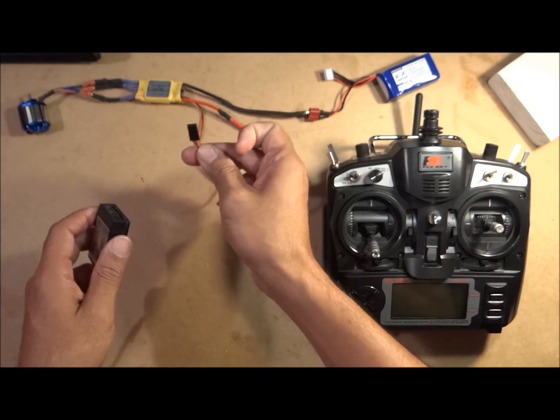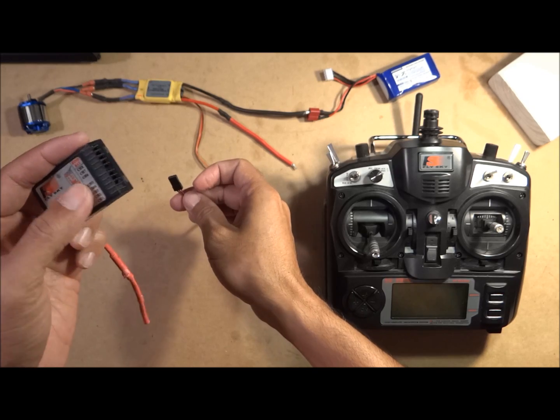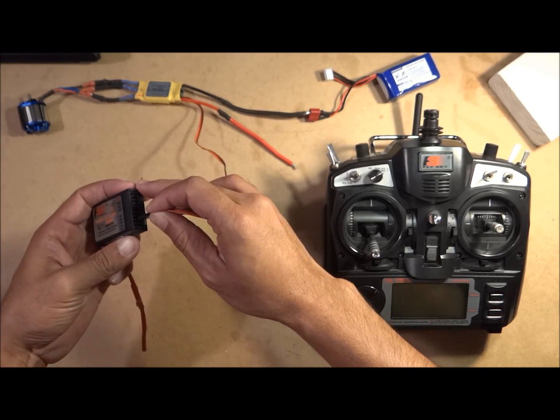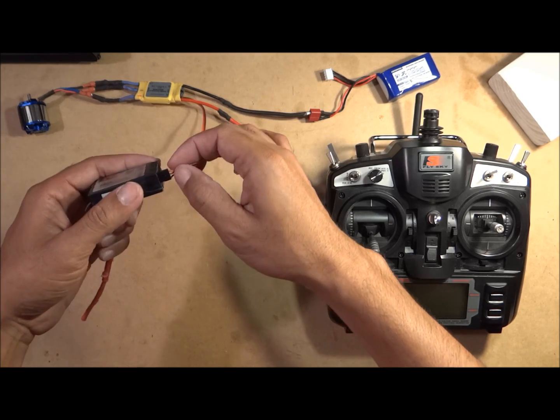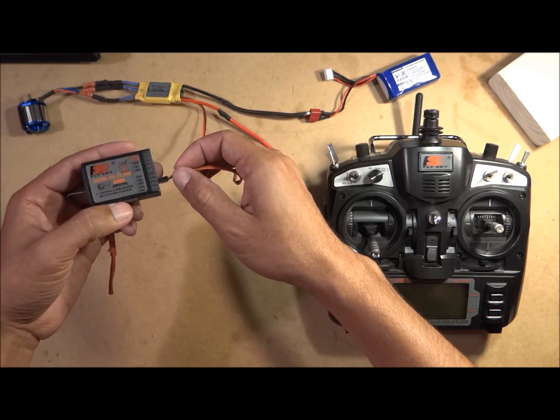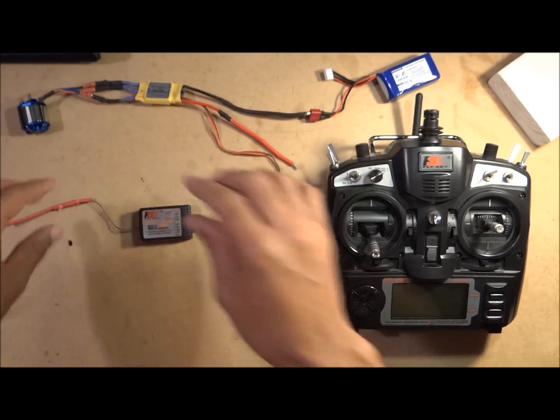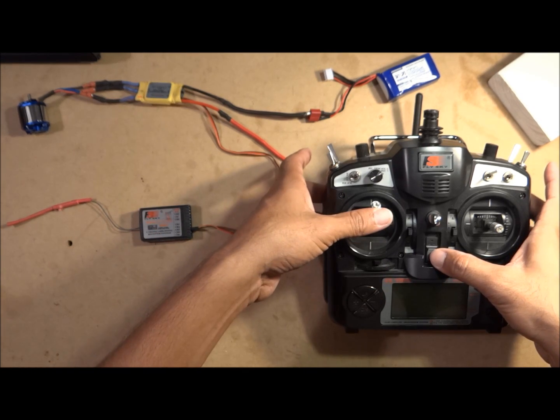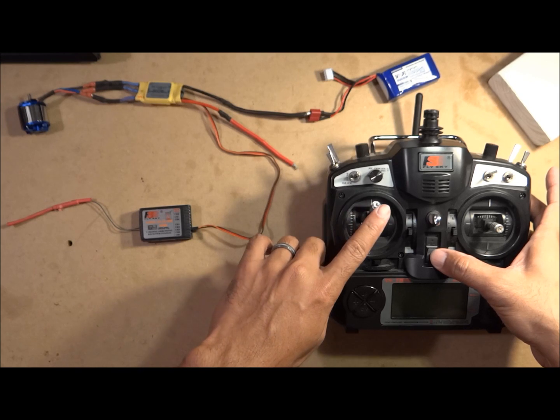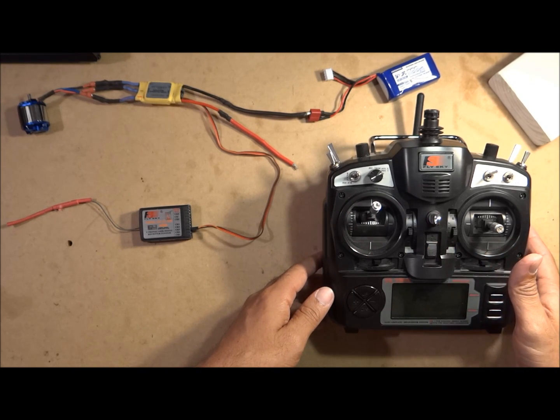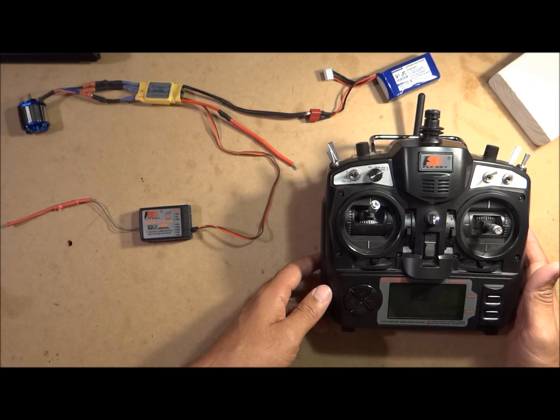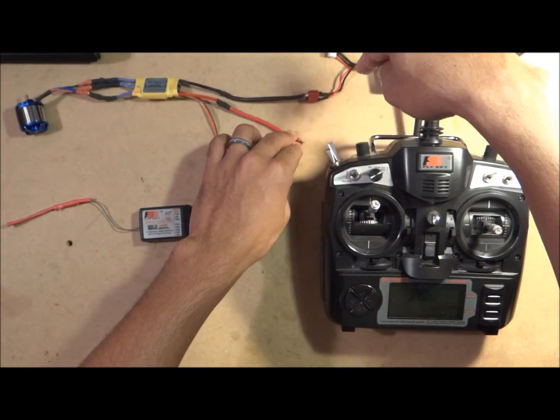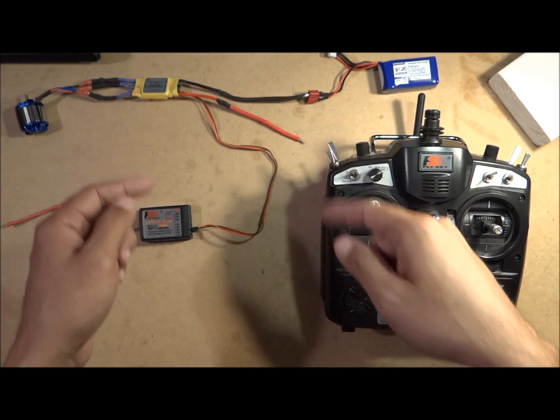First, you want to plug in your ESC to the throttle channel of your receiver. In my case, that would be channel three. Make sure the wires are in the right position, meaning signal is in the signal pin and so on. Next, you're going to push your throttle stick all the way up and power your transmitter. Next, you're going to want to plug in your ESC to the battery - just exactly this setup.